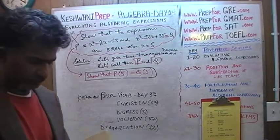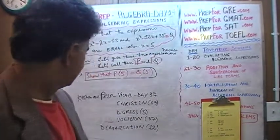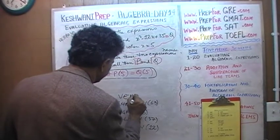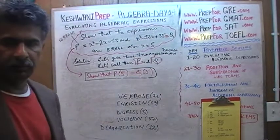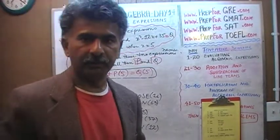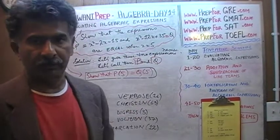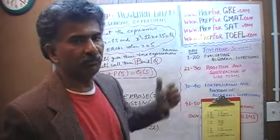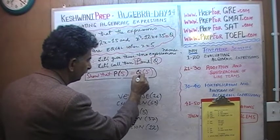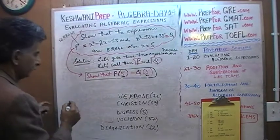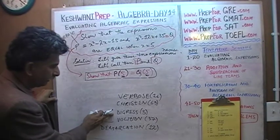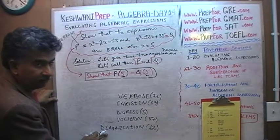I have the word verbose in mind — when did we learn verbose? Day number 16. These are good words to know, particularly useful if you're planning to sit for the GRE, GMAT, SAT, or TOEFL. Verbose was day 16, christen was day 63, digress is day 3, volition was day 37, and demarcation was something we learned on day number 12.